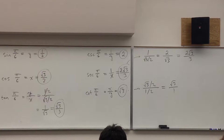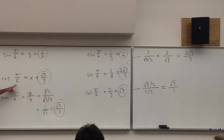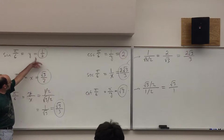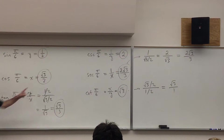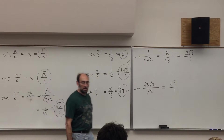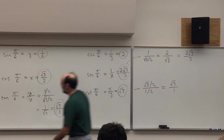Note that co-functions of complementary angles are equal: cosine and sine are co-functions, cotangent and tangent are co-functions, cosecant and secant are co-functions. Complementary angles sum to 90 degrees or pi over 2 radians. Pi over 3 is complementary to pi over 6, so cosine and sine are switched, cotangent and tangent are switched, and cosecant and secant are switched.